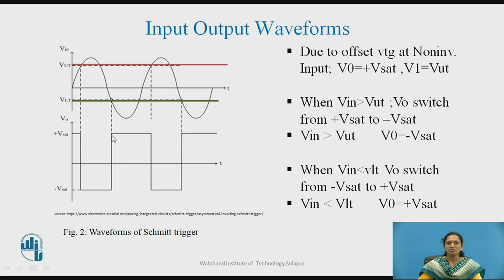As long as Vin is less than VLT, the output voltage will be at +Vsat. As there are only two threshold conditions, there will be no transition between these two points — that is, in between VUT and VLT.